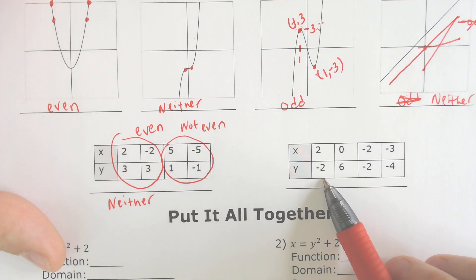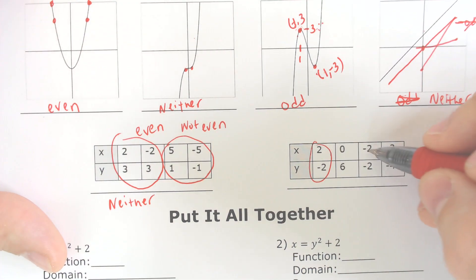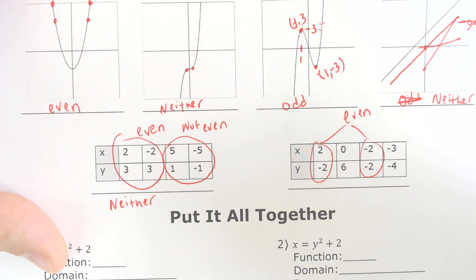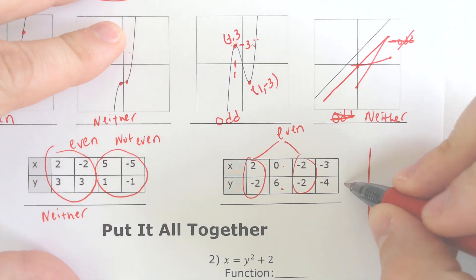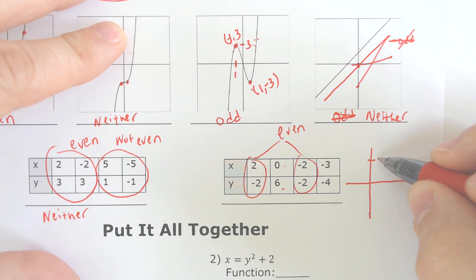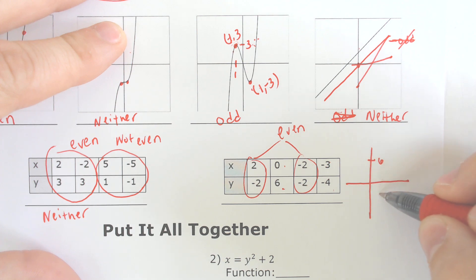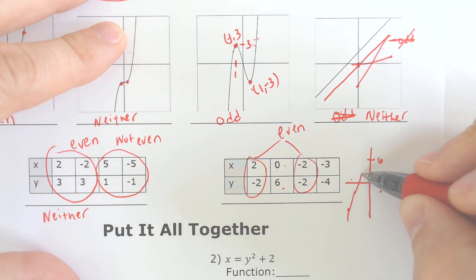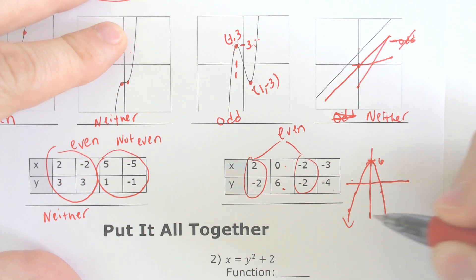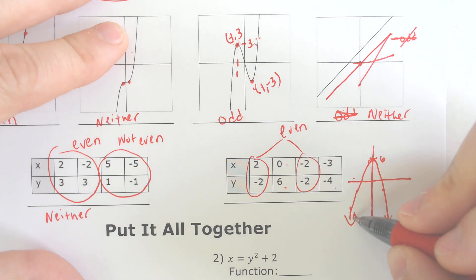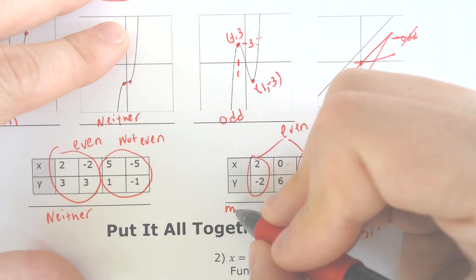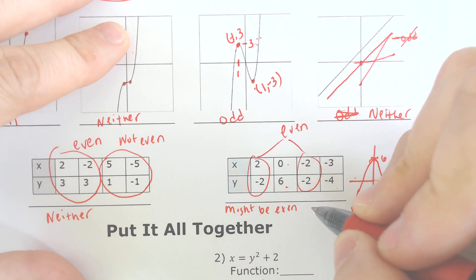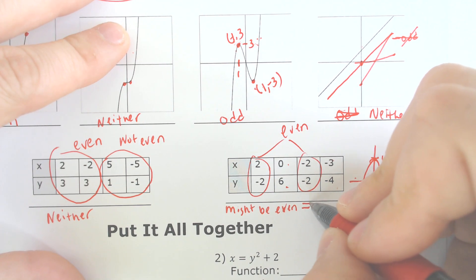Let's look over here — 2 produced negative 2, and negative 2 produced negative 2. So between these two, we have an even function. What about 0 and 6, and negative 3 and negative 4? We've got (0, 6) up here, (2, negative 2), (negative 2, negative 2), and then (negative 3, negative 4). This could be some sort of parabola shape, but that negative 3, negative 4 — we are uncertain about the other side. So this might be even, but it cannot be guaranteed, and therefore it degrades down to neither.